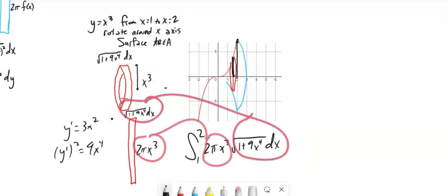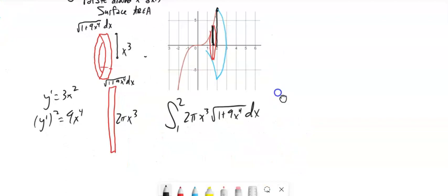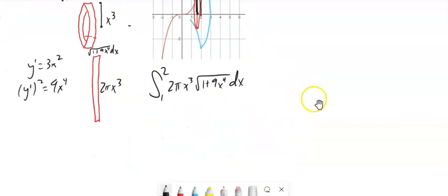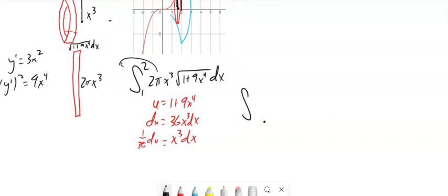And then I can work out that integral. And I would do a little u substitution on this one. I'll let u equal 1 plus 9x to the 4th. That means du would equal 36x³ dx. So 1/36th of du equals x³ dx.